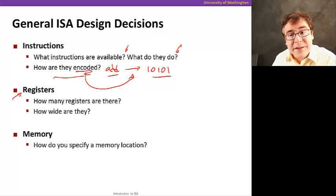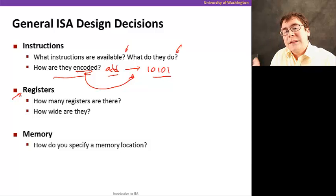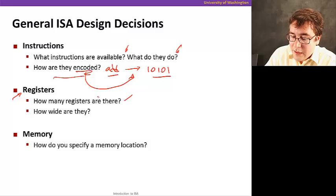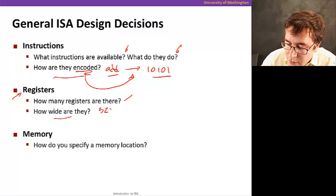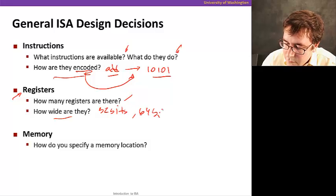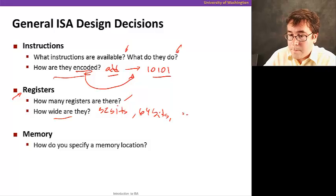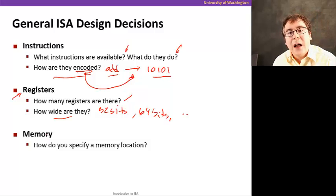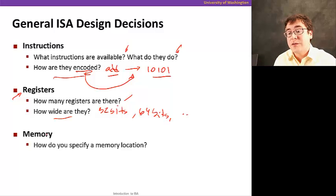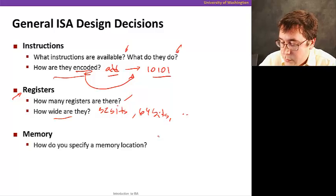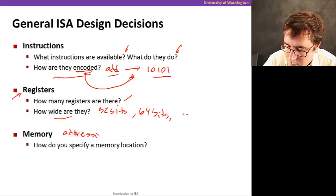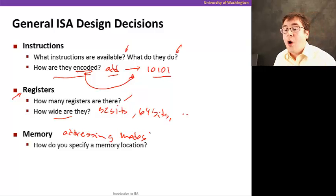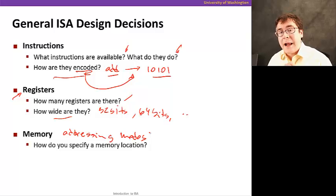The ISA also tells how many registers your computer has — how many explicit units of storage you have inside your processor — and how wide they are. For example, are they 32 bits or 64 bits, or smaller in very simple processors? Finally, the ISA also defines something very important: how do you specify a location in memory — how do you specify an address in your assembly code or in your instructions. This is also called addressing modes: all the ways that you can specify an address in your program.